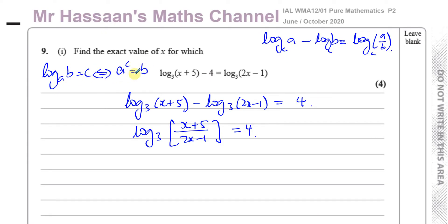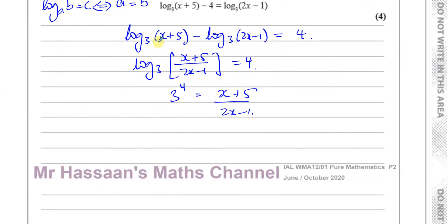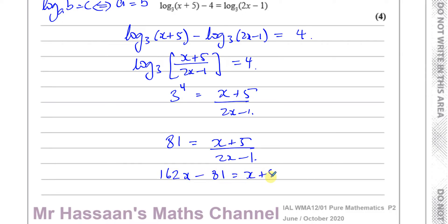That's how you can rewrite these interchangeably — you can change from log form to index form and back. I want to change this into index form. So 3 is my base, 4 is my power, and (x + 5) over (2x - 1) is my result. So 3 to the power of 4 equals 81, giving me 81 equals (x + 5) over (2x - 1). Multiplying both sides by (2x - 1) gives 162x minus 81 equals x plus 5.